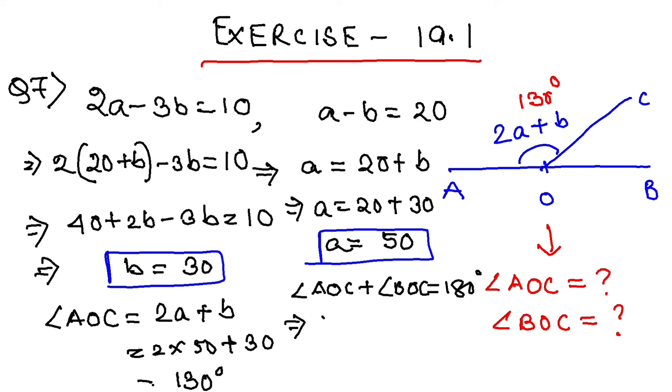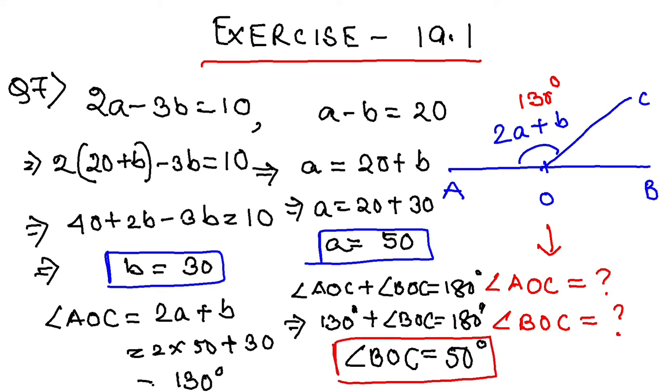We already know AOC is 130, so 130 plus BOC equals 180. From this, we find BOC equals 50 degrees. These are the final answers: angle AOC is 130 degrees and angle BOC is 50 degrees.